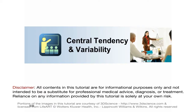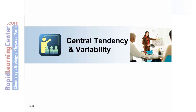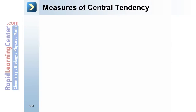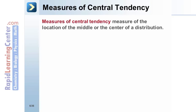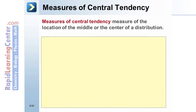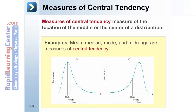The first section will discuss Measures of Central Tendency and Variability. Measures of Central Tendency measure the location of the middle or the center of a distribution. Examples include Mean, Median, Mode, and Midrange.